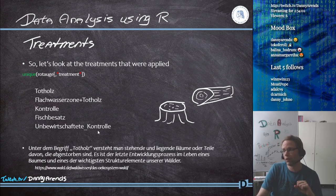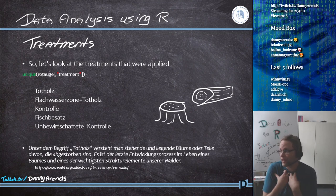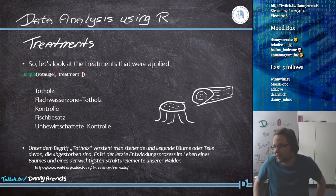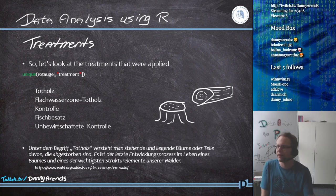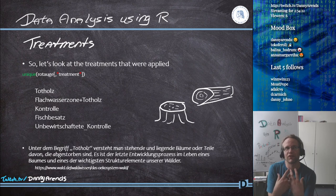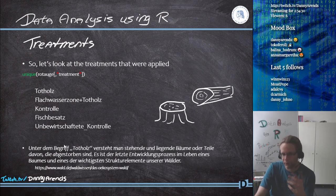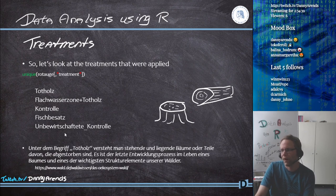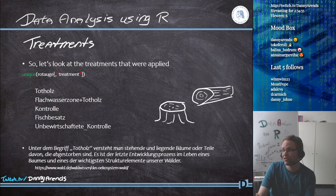Then there is an Unbewirtschaftete Kontrolle, and I was confused because how can you have two control groups? As a statistician, when someone says they have two control groups, I think there's uncertainty about what the default group really is. Looking further, the Kontrolle is fished, while the Unbewirtschaftete Kontrolle is not fished by anyone.